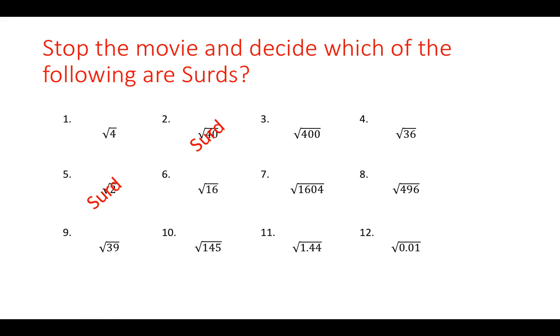Question 6, the square root of 16, we've already seen, it gives the answer 4, so it's not a surd. Question 7, the square root of 1,604, that one there, is a surd. Square root of 496 in your calculator, a large decimal answer once again, so it's also a surd.